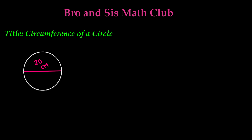Circumference is the enclosing boundary of a curved geometric figure, especially of a circle. In shorter terms, the circumference is really the perimeter of a circle. So this outside boundary, or the perimeter of the circle, is called the circumference.